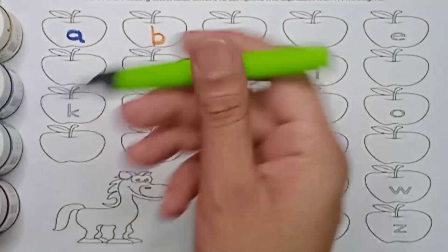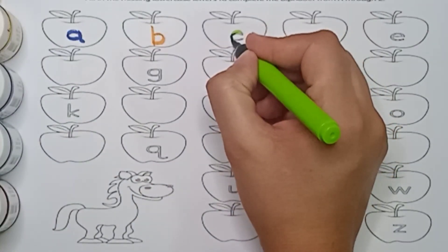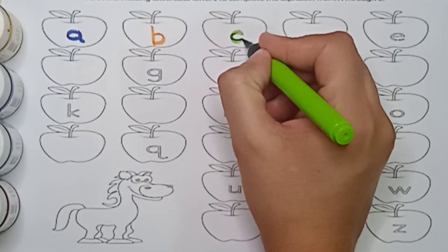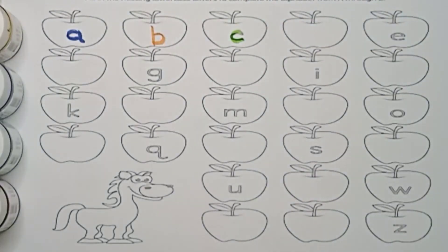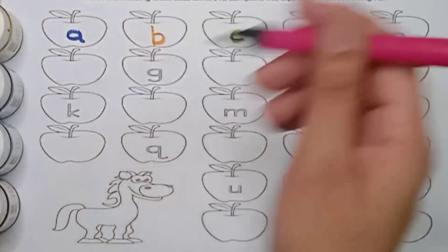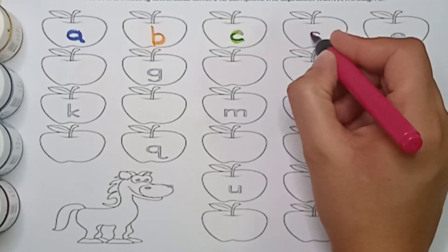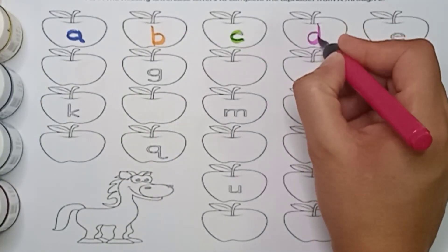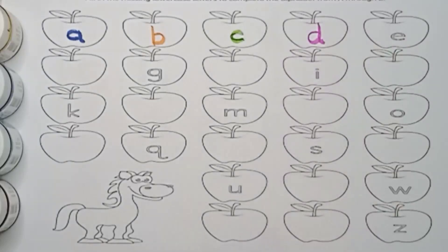Green color. C, C is for candy. Pink color. D, D is for dog.